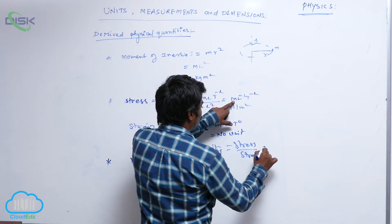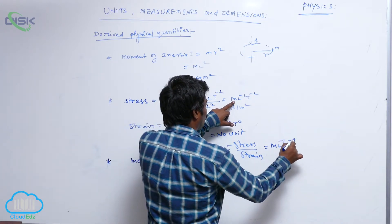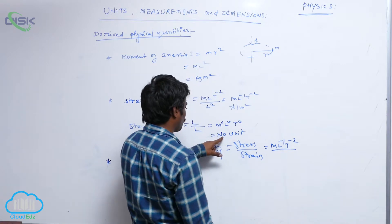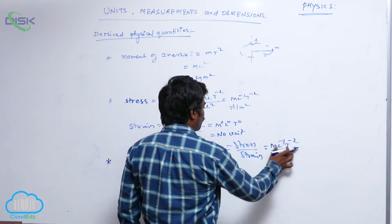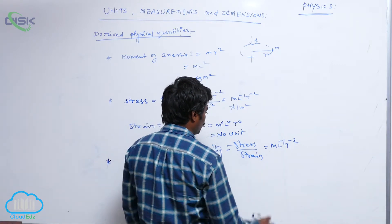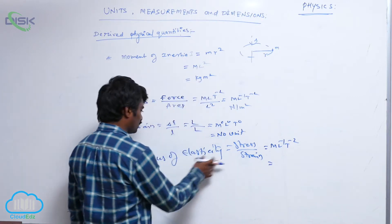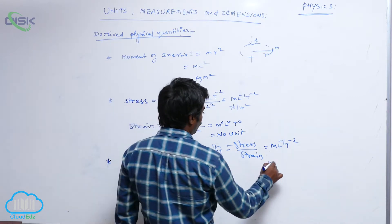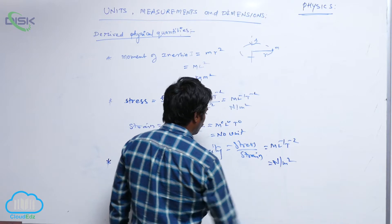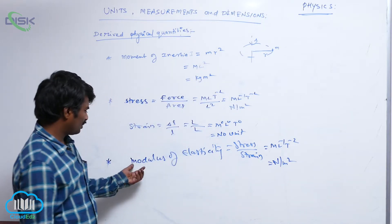Its dimensional formula is no dimensional formula, that is why m l minus 1 t minus 2 is dimensional formula of modulus of elasticity and unit is again newton per meter square.